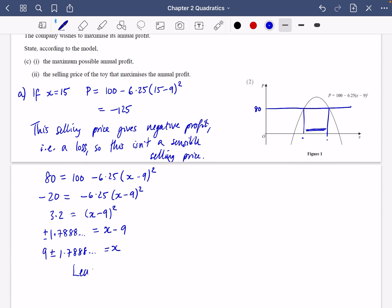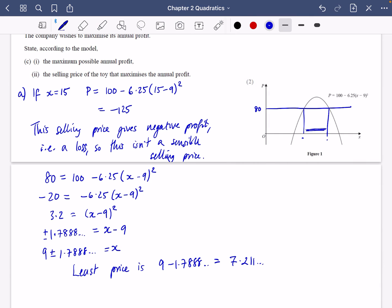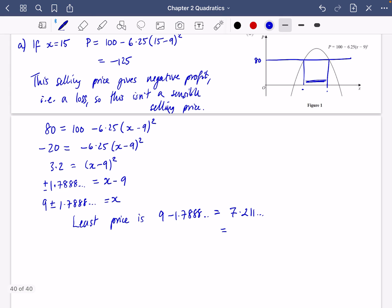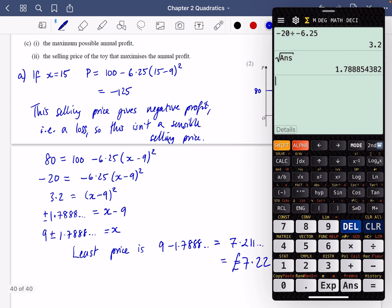So the least price is going to be 9 - 1.788, which is 7.211 pounds. But I couldn't sell it for £7.21 because that wouldn't make enough profit. So the least price would be £7.22. And you can check that by substituting in 7.22 into this formula. So I'll do 100 - 6.25(7.22 - 9)². And I do get £80,000. Well, I think £80,197.50 for that least selling price there.